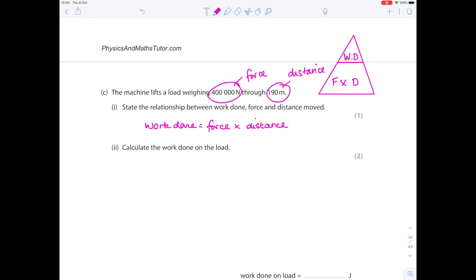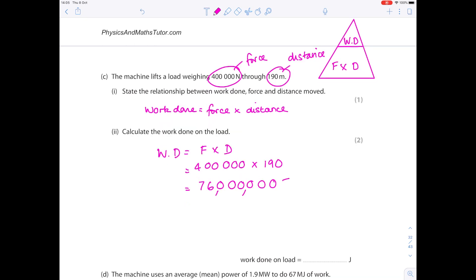So when you get to part 2, calculate the work done on the load. I'm just writing out in shorthand because that's not what the question is about. The question is about the maths element. So I know that it's 400,000 times 190 to get this very large number here, which is 76 million. The unit of work done is the same as energy, it's joules. So we can just write that number down here again.